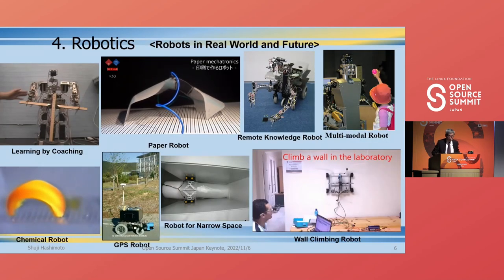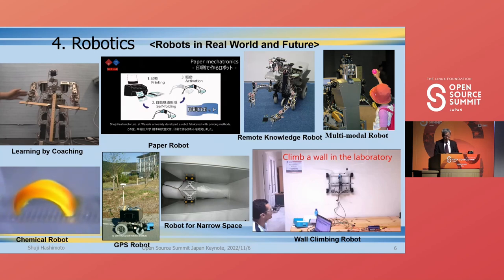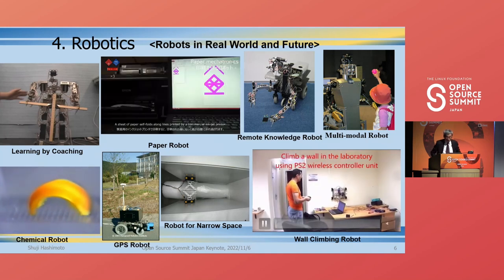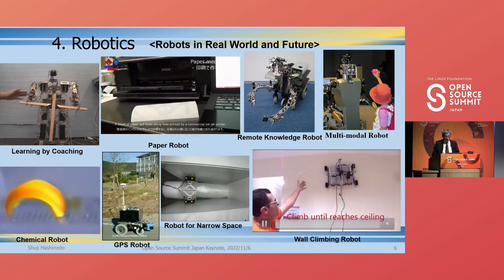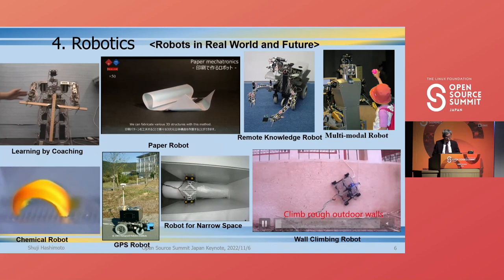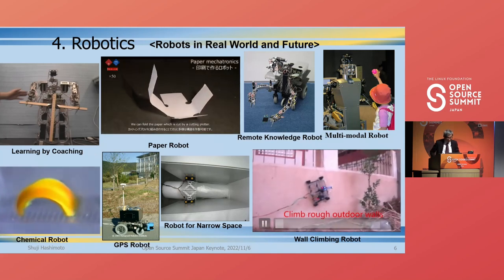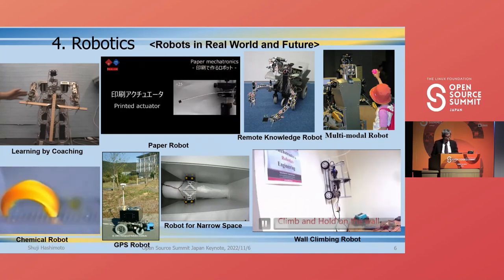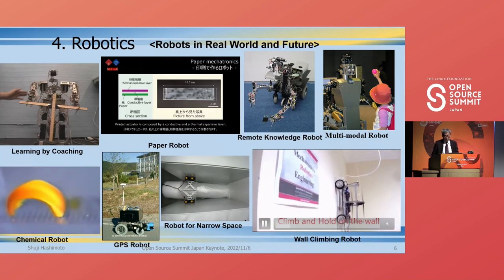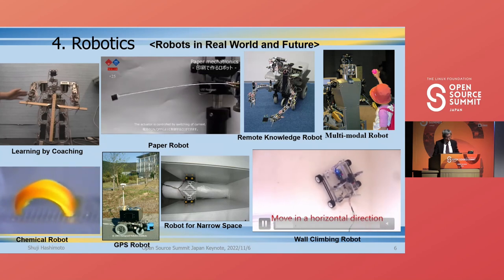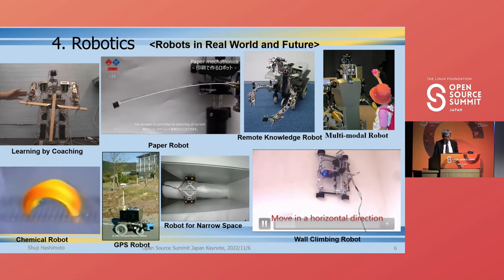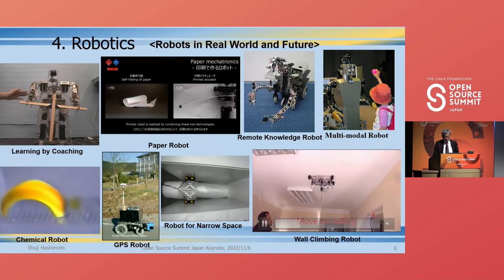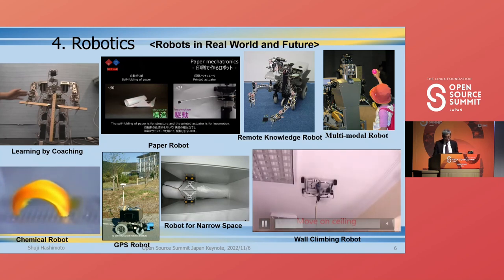The last group integrates these areas to create robots and produced various robots, most of which pursued robustness in the actual environment. We also conducted research on a new robot based on chemical reaction. I'm most proud of the fact that the students who obtained degrees through these studies are now active as leading researchers and engineers. In building many of these systems, we are greatly indebted to open source software. Without it, it would not have been possible to tackle so many topics.